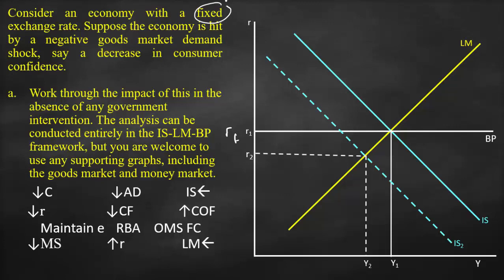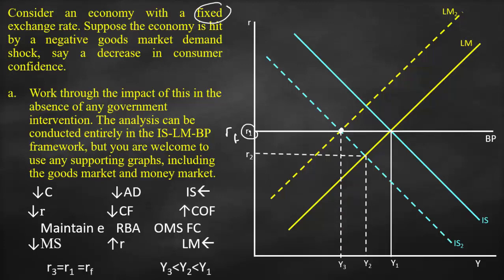Consequently, the money supply decreases, which results in a higher interest rate. This higher interest rate affects the LM curve, causing it to shift to the left. The LM curve shifts left until it intersects with the point where IS2 meets the balance of payments curve. The market now reaches equilibrium because all three curves intersect at the same point. We return to R1 — our original interest rate — but our output is now Y3, which is lower than Y2, which is lower than Y1.